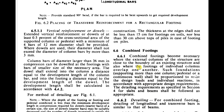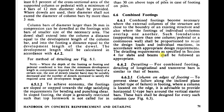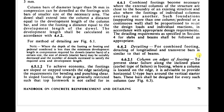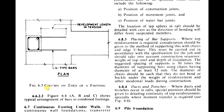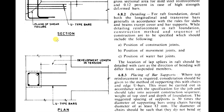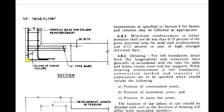Combined footings are used where external columns are close to the boundary of an existing structure or where individual column footings overlap. Detailing requirements from section 4 for slabs and beams shall be followed. For a column located on the edge of a footing, to prevent shear failure along an inclined plane (corbel failure), it is advisable to provide horizontal U-type bars around the vertical starter bars.